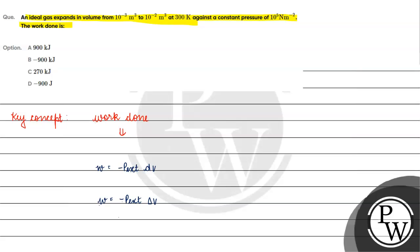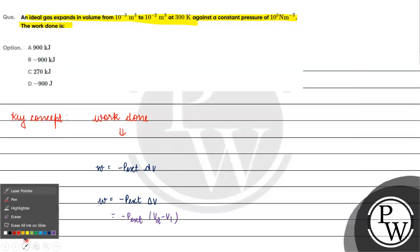Delta V is the change of volume, which we write as V2 minus V1. V2 is the final volume and V1 is the initial volume. Final volume is 10 raised to the power minus 2, initial volume is 10 raised to the power minus 3. P external is 10 raised to the power 5 Newton per meter square.